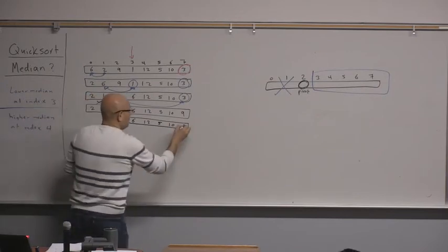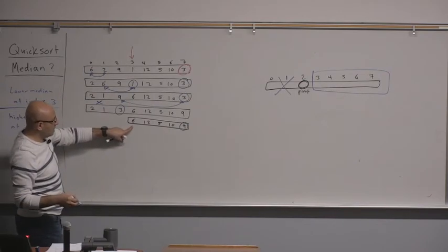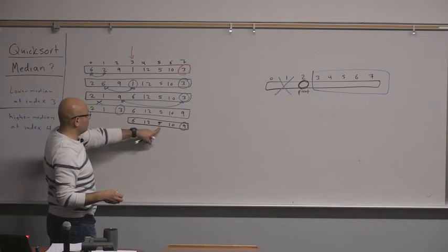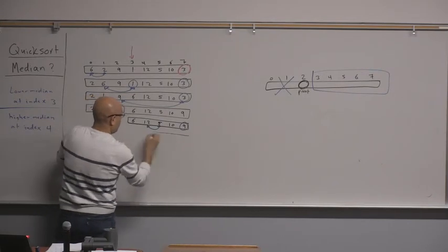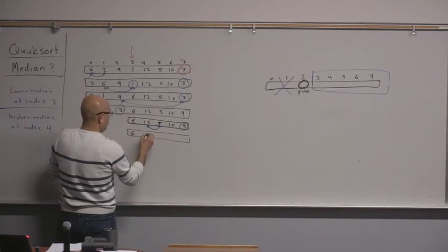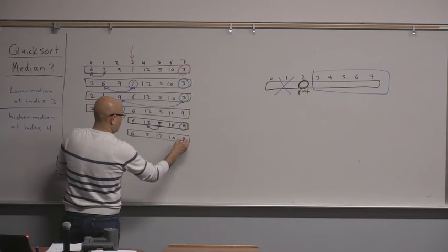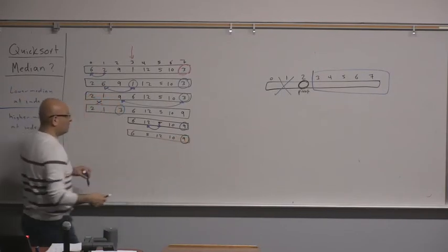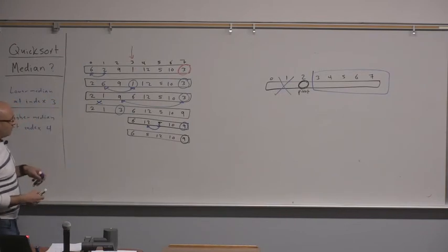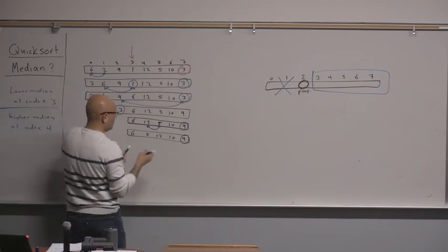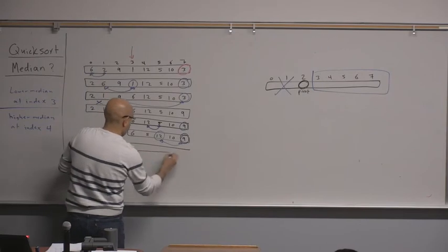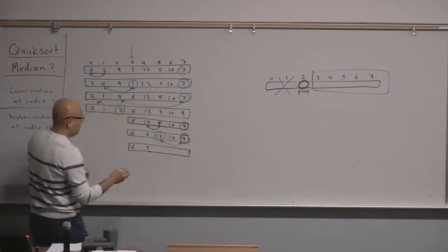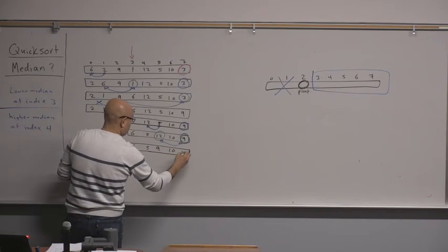Now our pivot is 9. 6 is smaller than the pivot — no swap needed at this point. 5 is smaller, so we swap it with 12, giving us: 6, 5, 12, 10, 9. Then 10 is larger than the pivot, so no swap. The pivot 9 gets swapped with 12, giving us: 6, 5, 9, 10, 12.